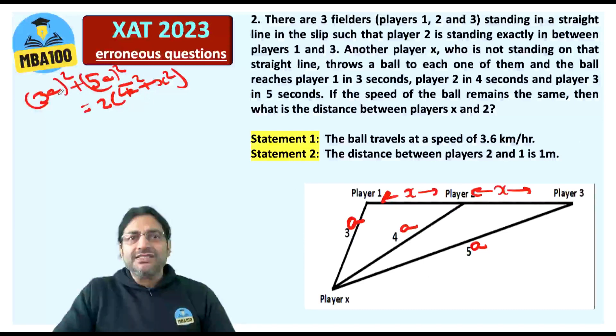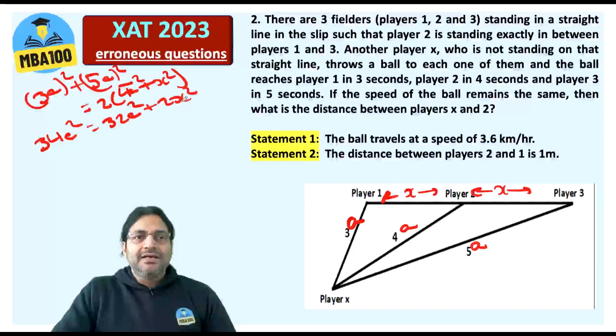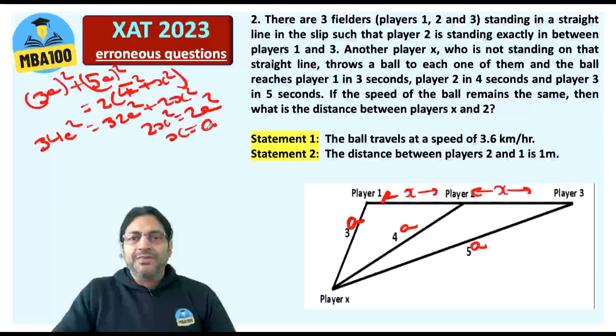Let's solve this. On the left hand side, you get 9A² + 25A², that is 34A². And on the right hand side, you get 32A² + 2X². This gives you 2X² is equal to 2A² and X is nothing but A.